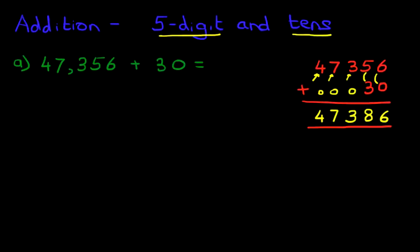So 47,356 plus 30 is 47,386. That is correct. We can give ourselves a nice big tick, and it really is that simple.